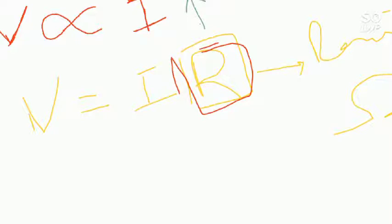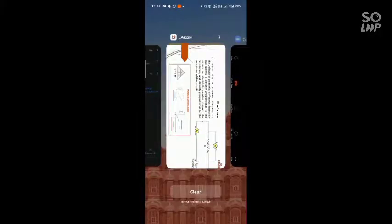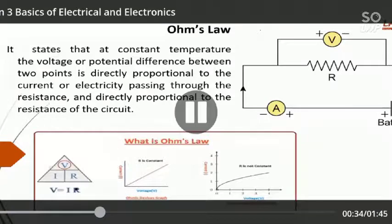Let us further move to the screen. Now V is directly proportional to I R, which means if we increase voltage, the current in the circuit will increase. So will be the resistance. There is a direct proportionality between the two terms.